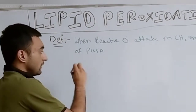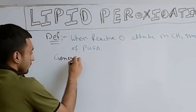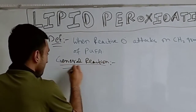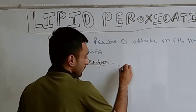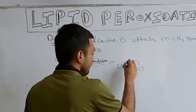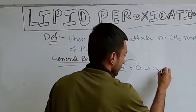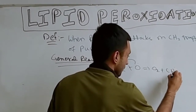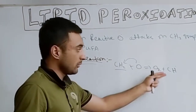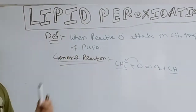I will show you by the help of a general reaction. This is the general reaction of lipid peroxidation. This is the CH2 group of the lipid, and the reactive oxygen reacts with it. What happens is that this oxygen free radical extracts the proton from this CH2 group and makes it a free radical, making it unstable.